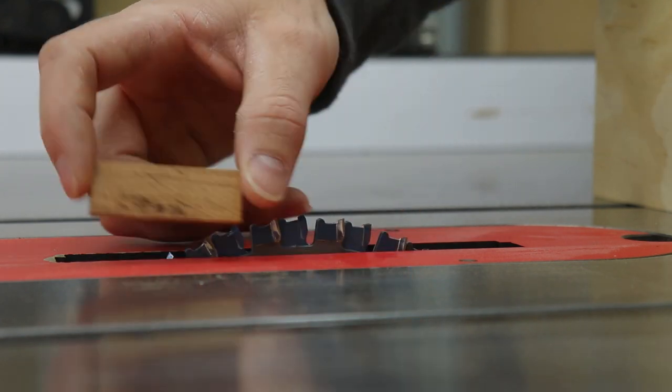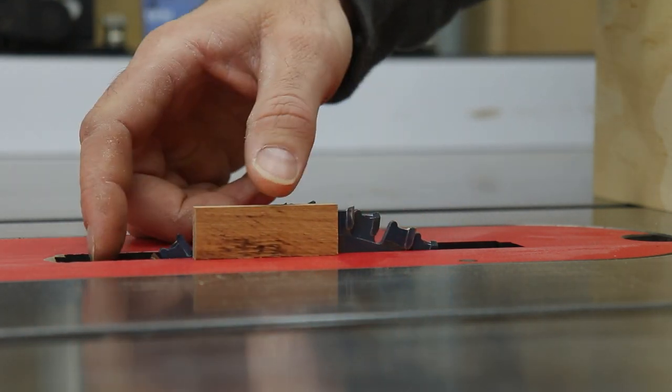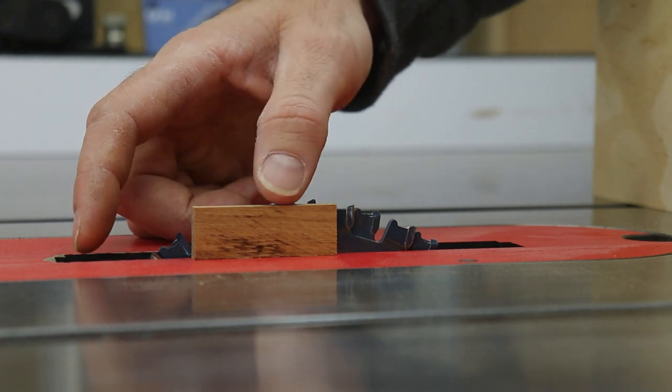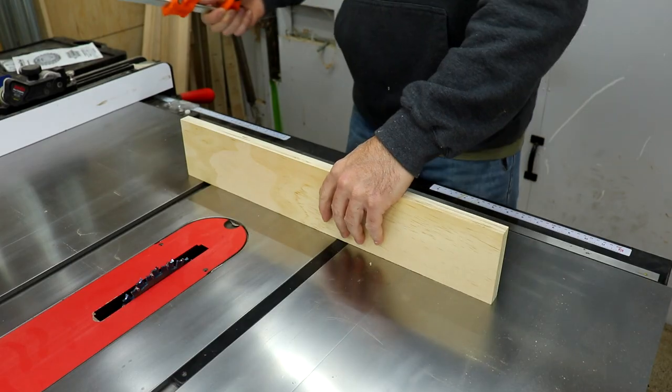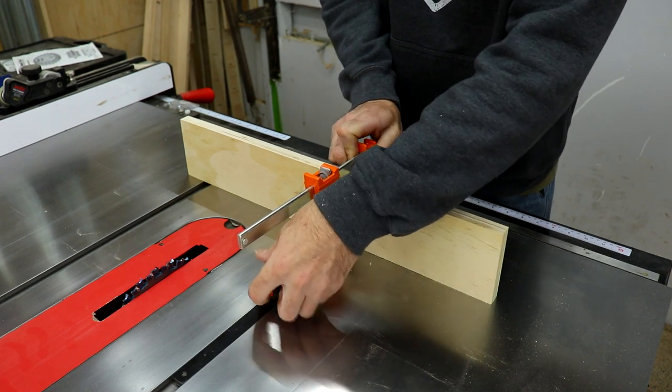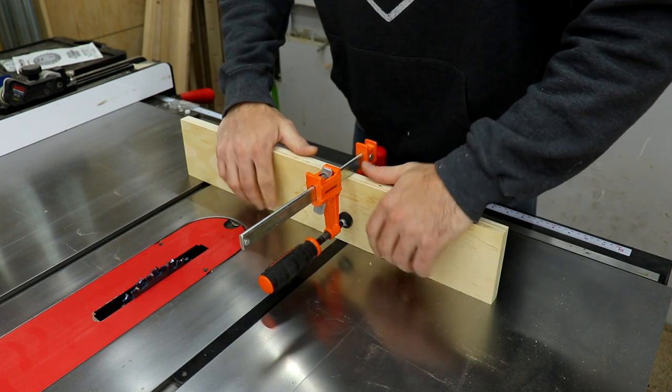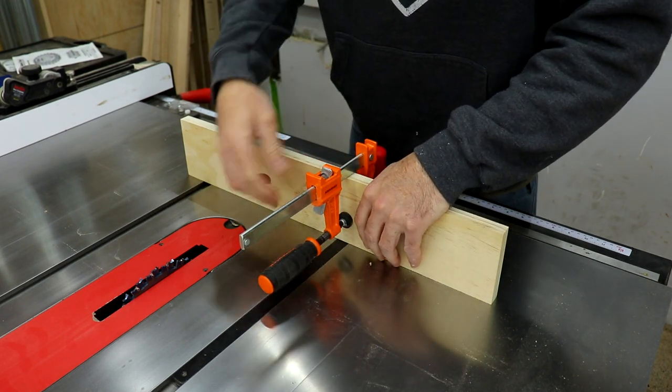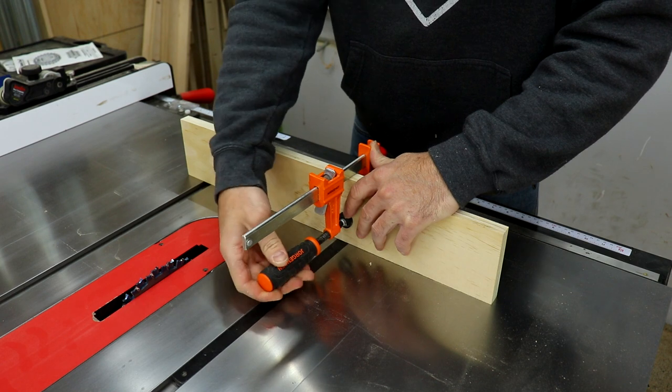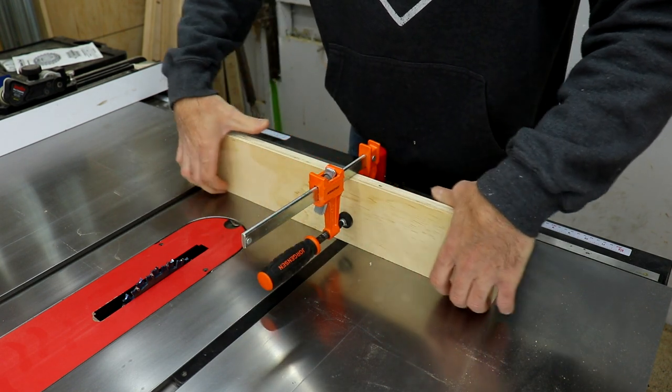I take the pieces that I cut off the strip and set my blade height just a bit higher than they are. Once that's done, it's time to set up the sacrificial fence that will turn into the jig. I use a piece that's about 20 or 24 inches long and about four inches tall, clamp it to the miter gauge and make a cut flush with the table saw bed.